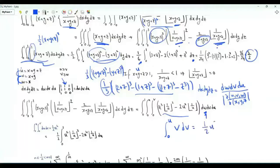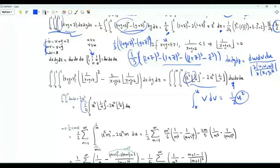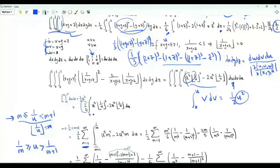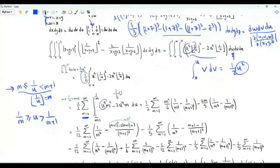Integrating over w from 0 to v gives v; then integrating v from 0 to u gives ½u². So the remaining integral is ½ ∫₀¹ [u⁵·(⌊1/u⌋)² − 2u⁴·⌊1/u⌋] du. For u ∈ (0,1), 1/u > 1; if ⌊1/u⌋ = m, then 1/(m+1) ≤ u < 1/m. The integral becomes a sum over positive integers m of ∫_{1/(m+1)}^{1/m} [u⁵·m² − 2u⁴·m] du. The antiderivative of u⁵ is u⁶/6 and of u⁴ is u⁵/5.